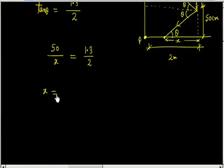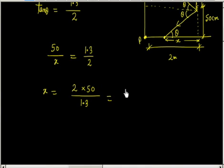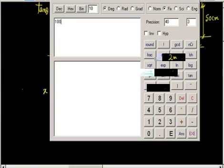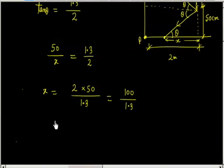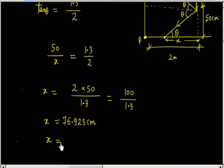Equating the two expressions: 50 divided by x equals 1.3 divided by 2. Solving for x: x equals 2 times 50 divided by 1.3, which is 100 divided by 1.3. This gives 76.923 centimeters. Converting to meters, x equals 0.769 meters.